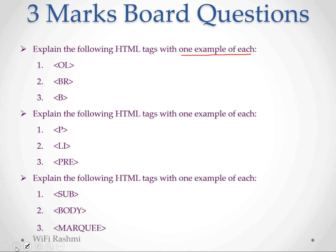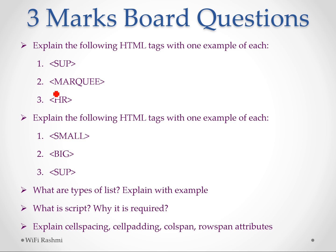Anchor tag, alt attribute, or image tag — so that's three marks. One tag equals one mark. The next theory is what are types of list — three types of list, you will get three marks. What is script — this is a very rare case to ask, you can avoid it. Explain cell spacing, padding, colspan, rowspan — this can be asked for three marks, so you should know the definitions.